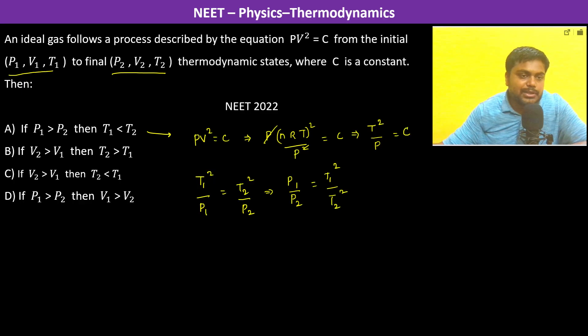Now, P1 is greater than P2. Therefore, T1 square will be greater than T2 square and this T1 will be greater than T2. Therefore, this option is not going to satisfy that relationship.